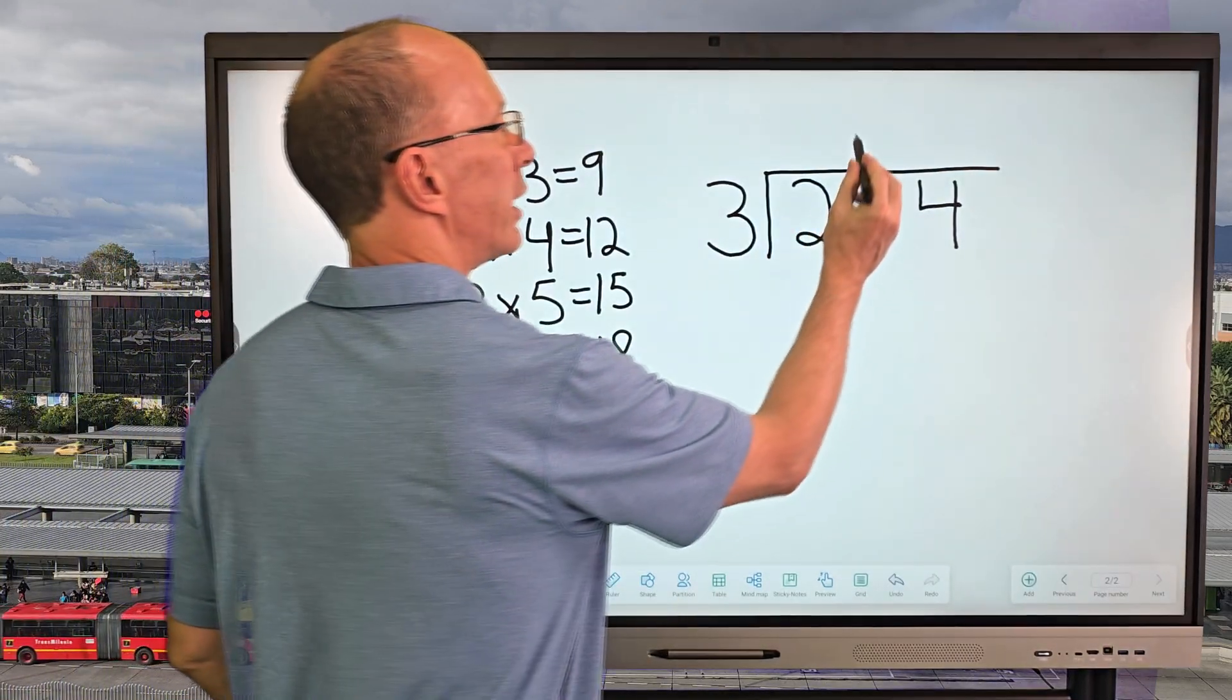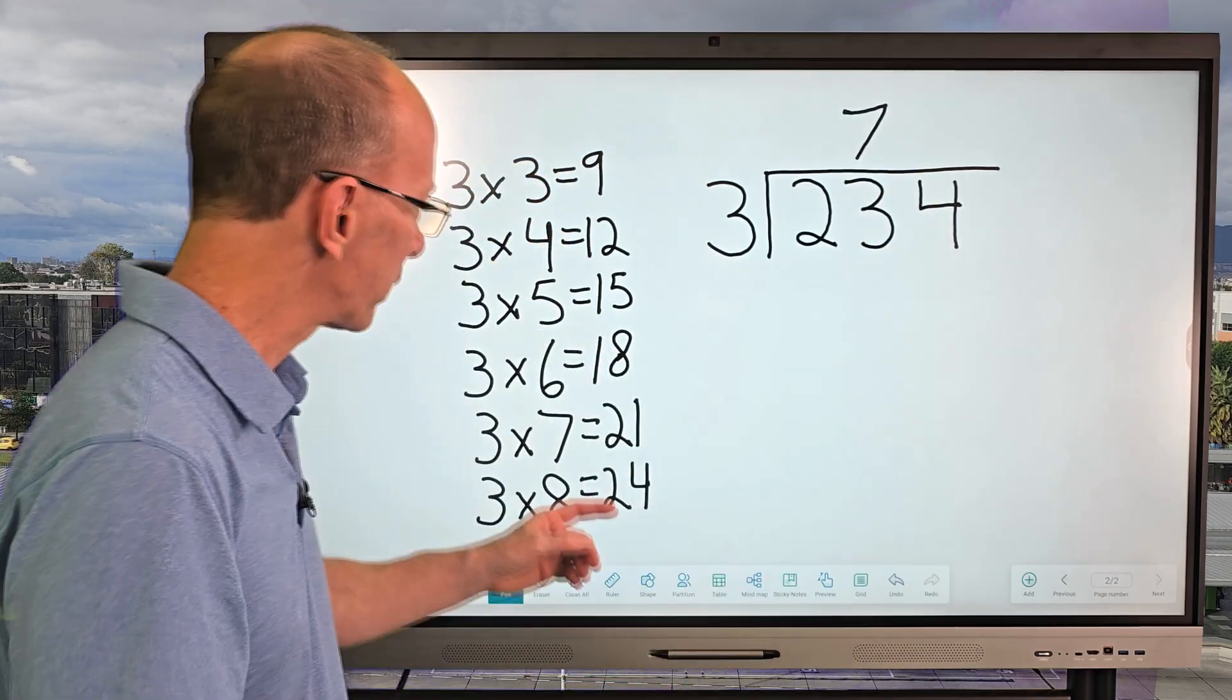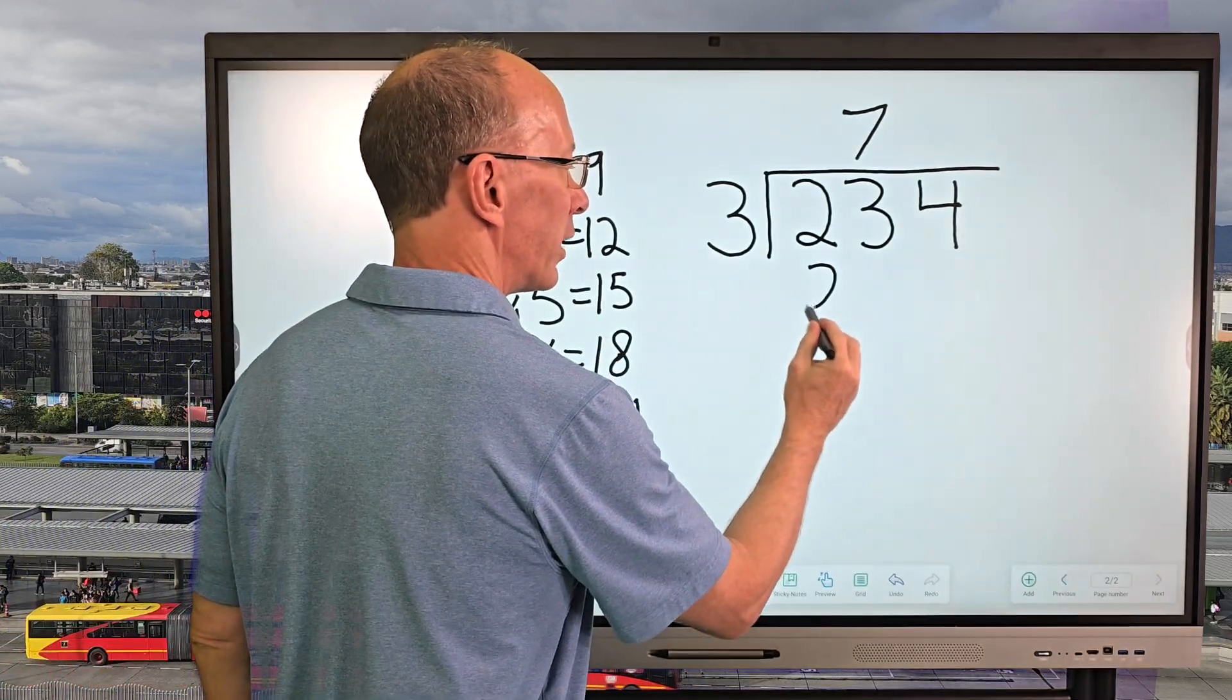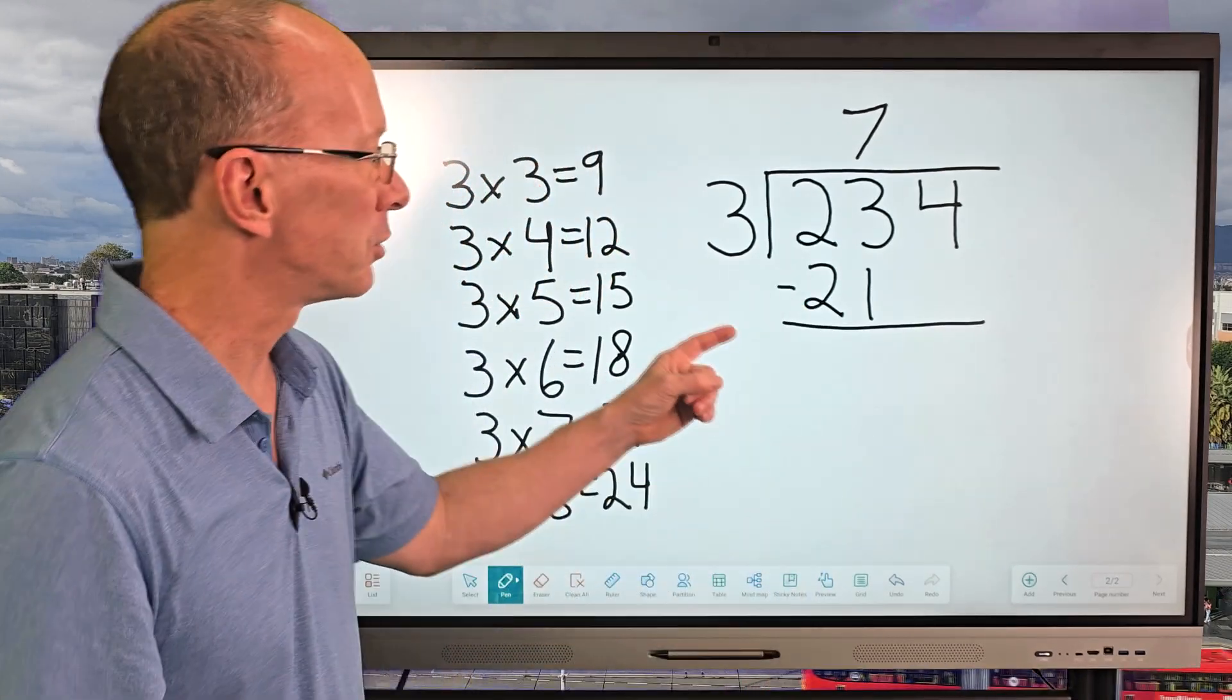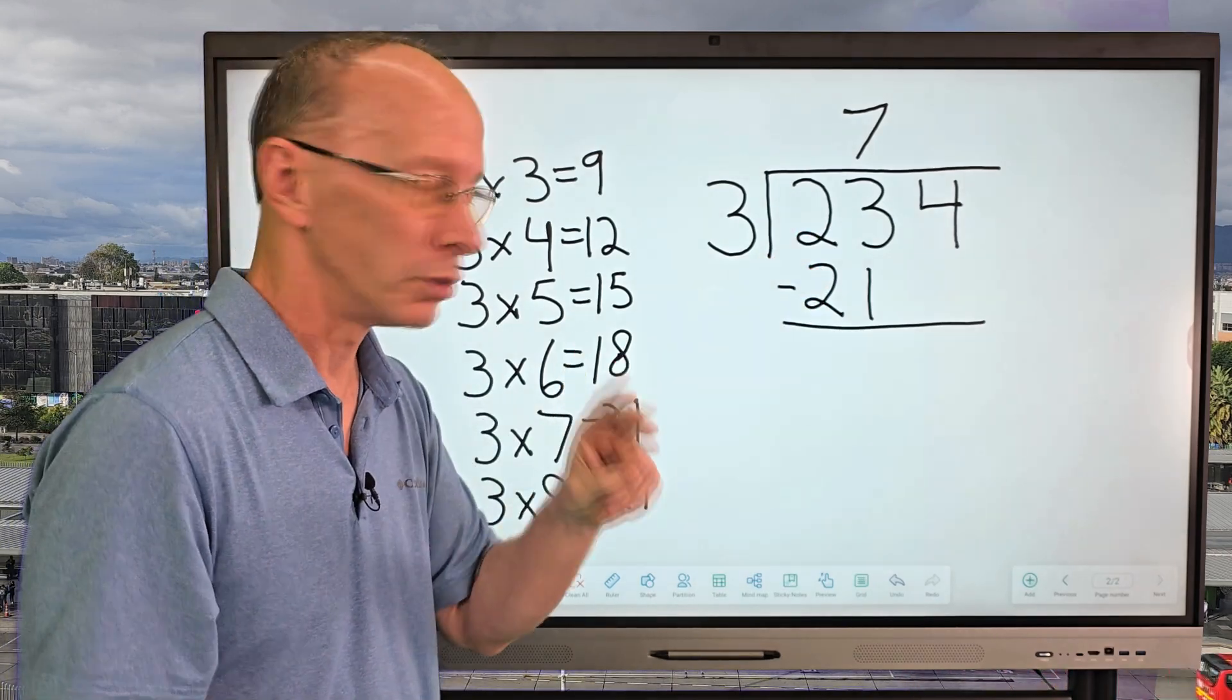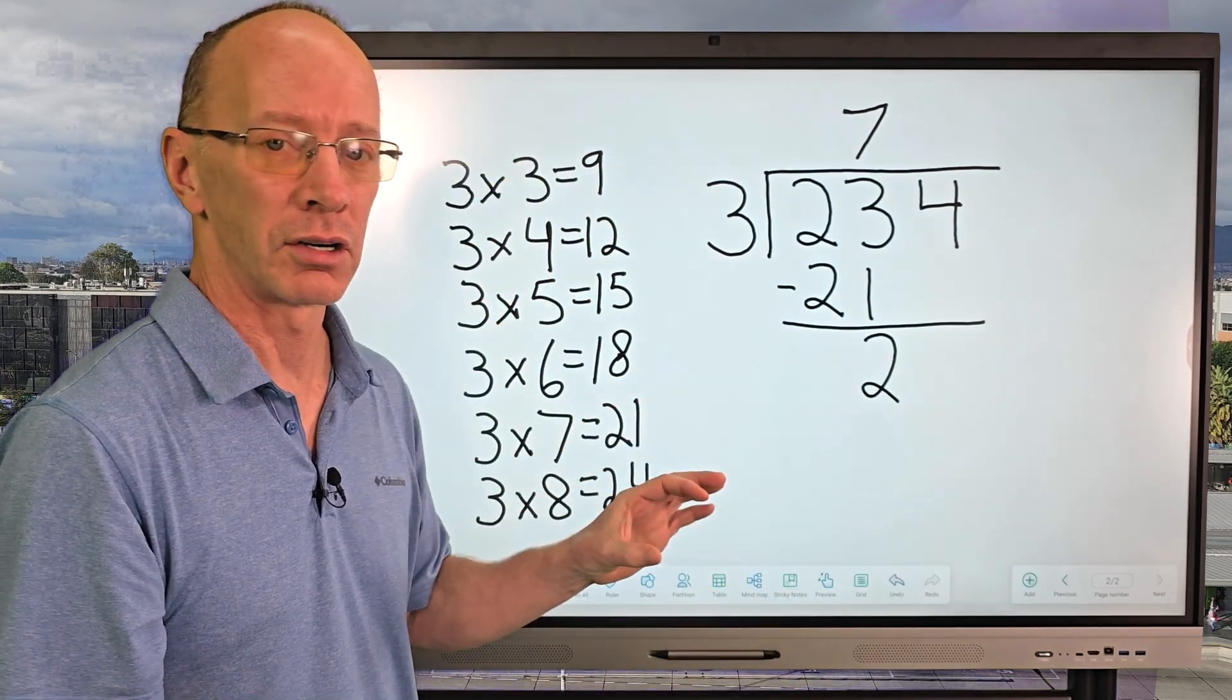So I put the 7 right up here, right there. And now I use the multiplication. 7×3=21, so I put 21 right here. All right. So our next step is going to be subtraction. So I'm going to subtract, 3-1=2. I put the 2 right here. And then 2-2=0. You don't need to write zero at all.